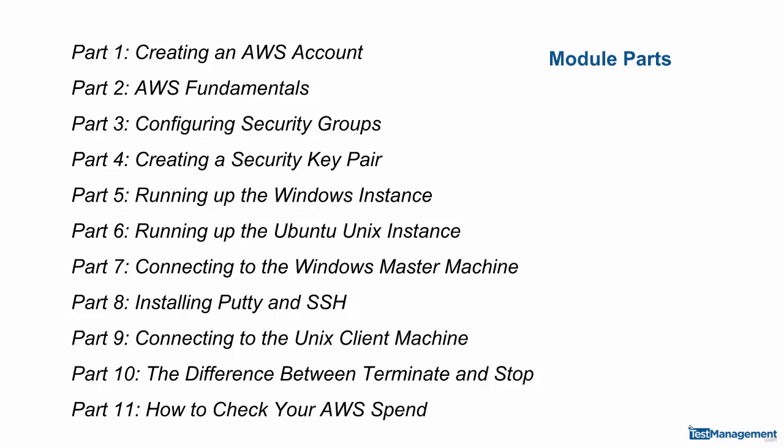Part 7 we're looking at the connections to the Windows machine. Parts 8 and 9 we're looking at installing PuTTY so that we can connect to our Linux machine. Part 10 we're just going to talk a little bit about the difference between terminate and stop when we shut down our instances. And finally in part 11, we'll look at how to check your AWS spend and monitor your account usage.